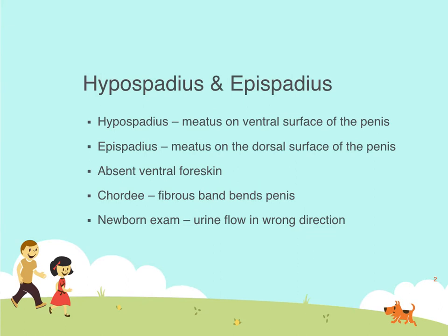We're going to talk about hypospadias and epispadias. What these are is the urethral opening is not located in the middle of the glans penis. With hypospadias, the meatus of the urethra is on the ventral surface, and with epispadias it is on the dorsal surface — below for hypo and above for epi.